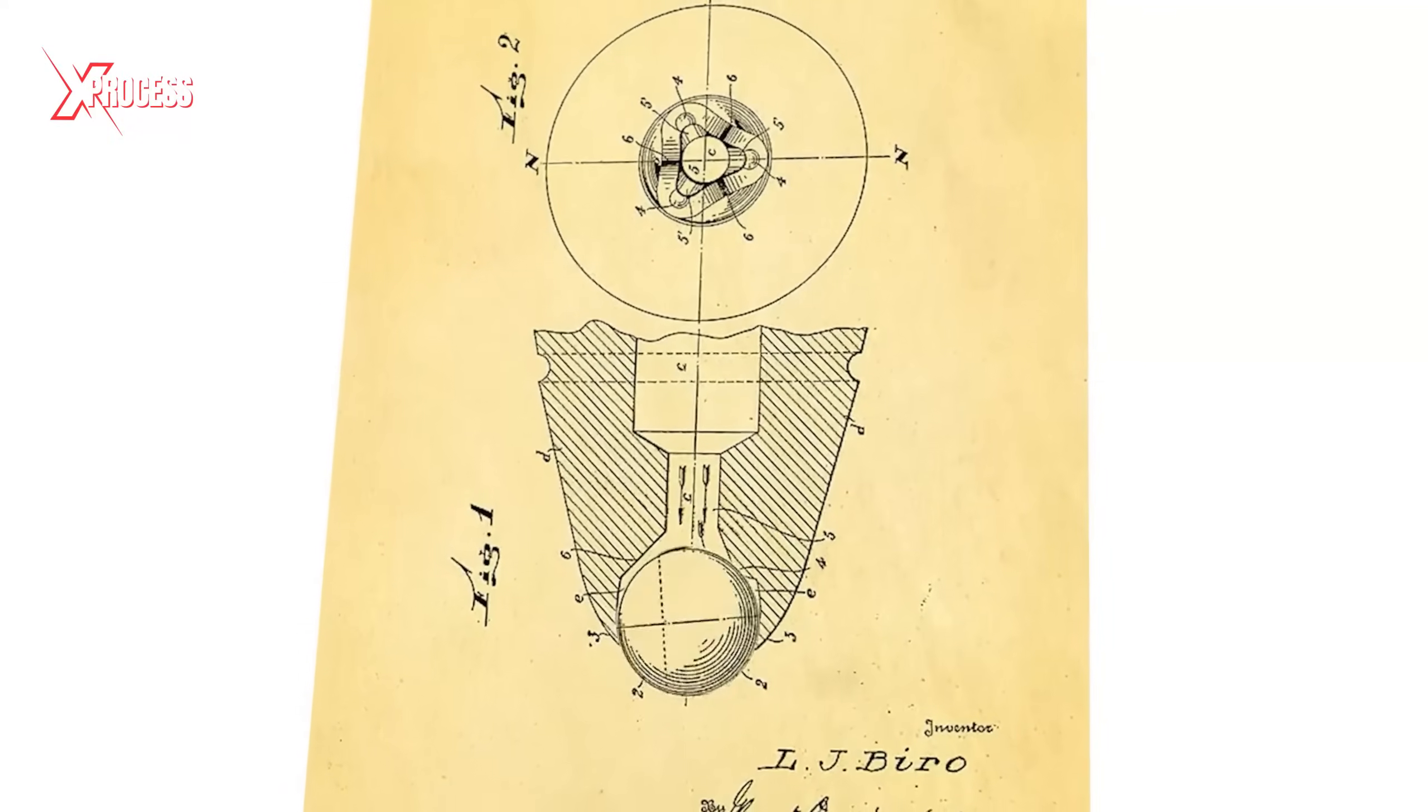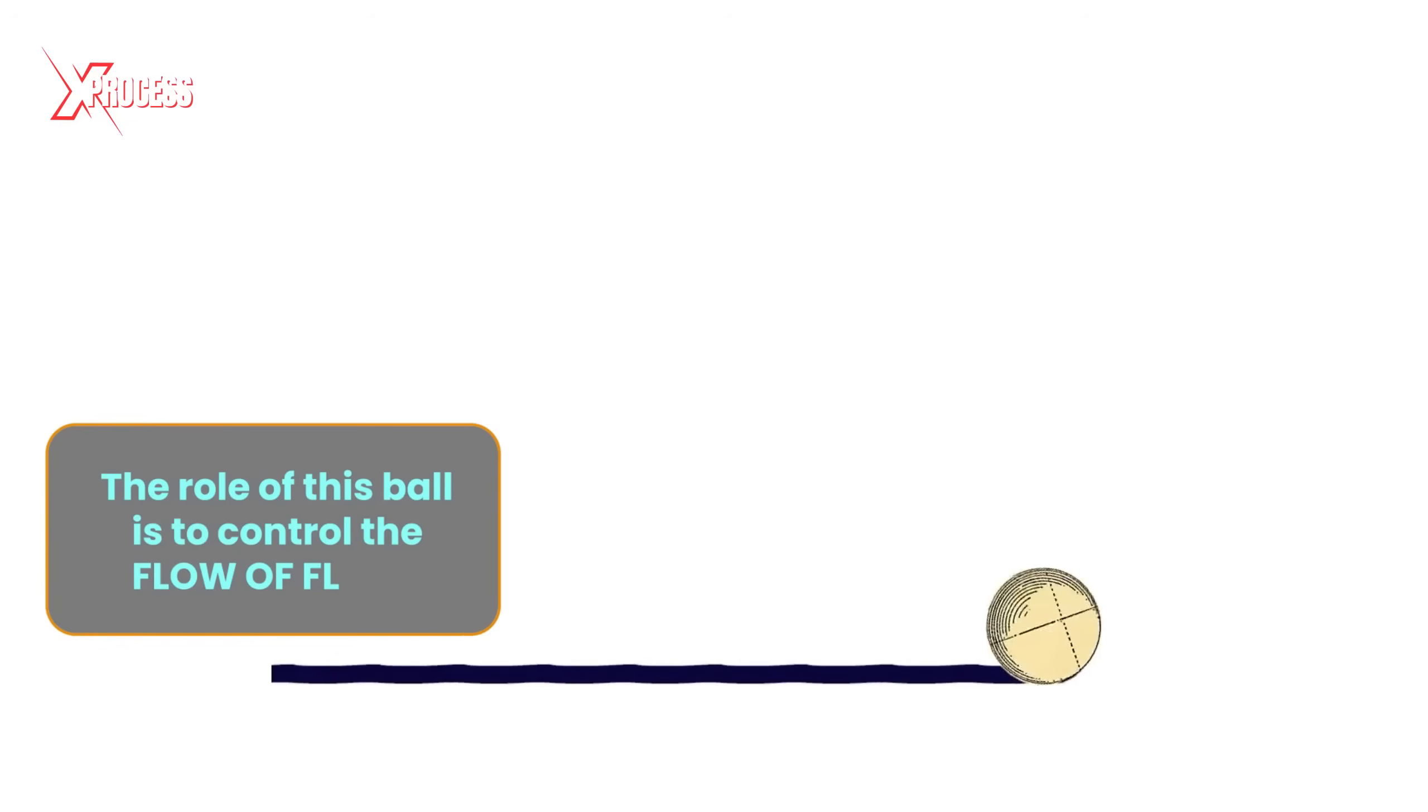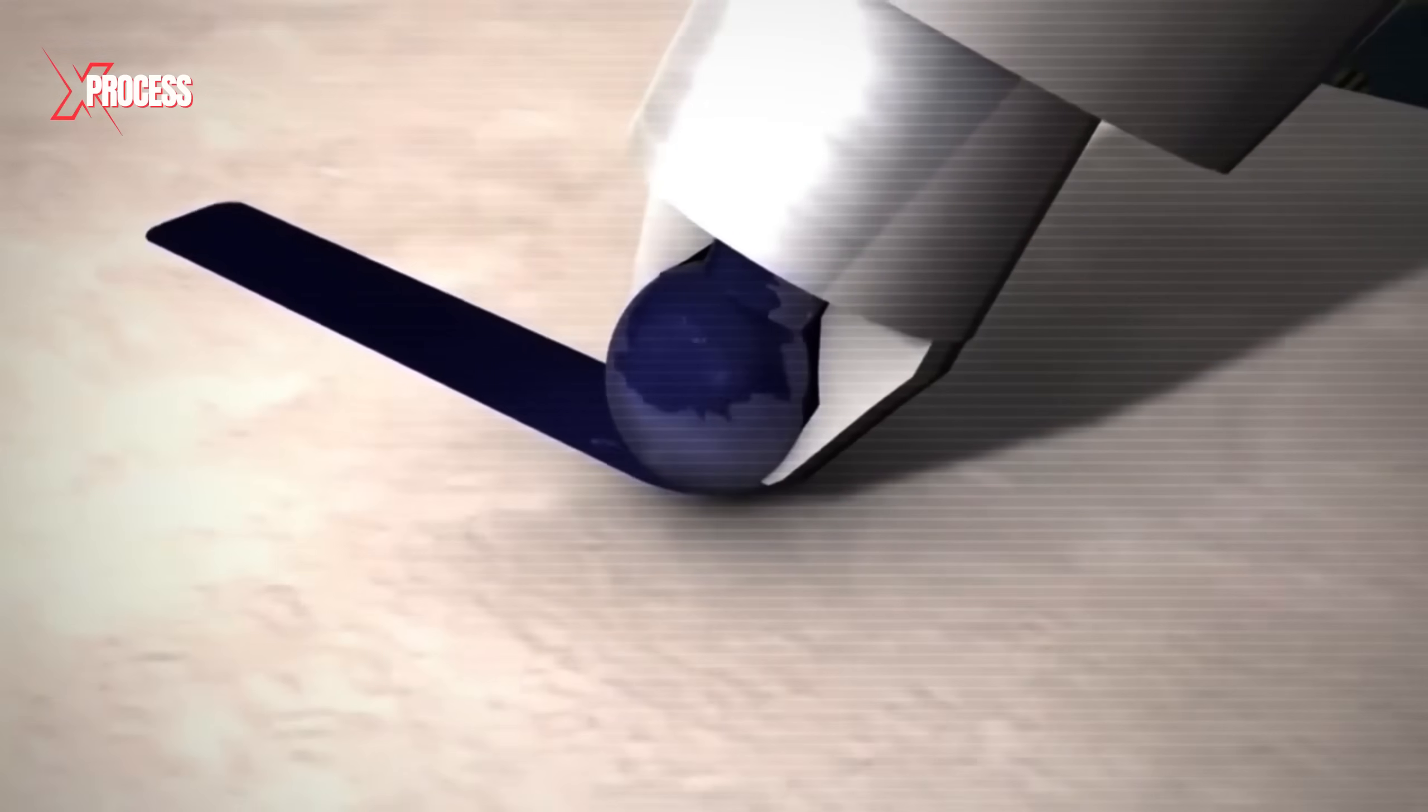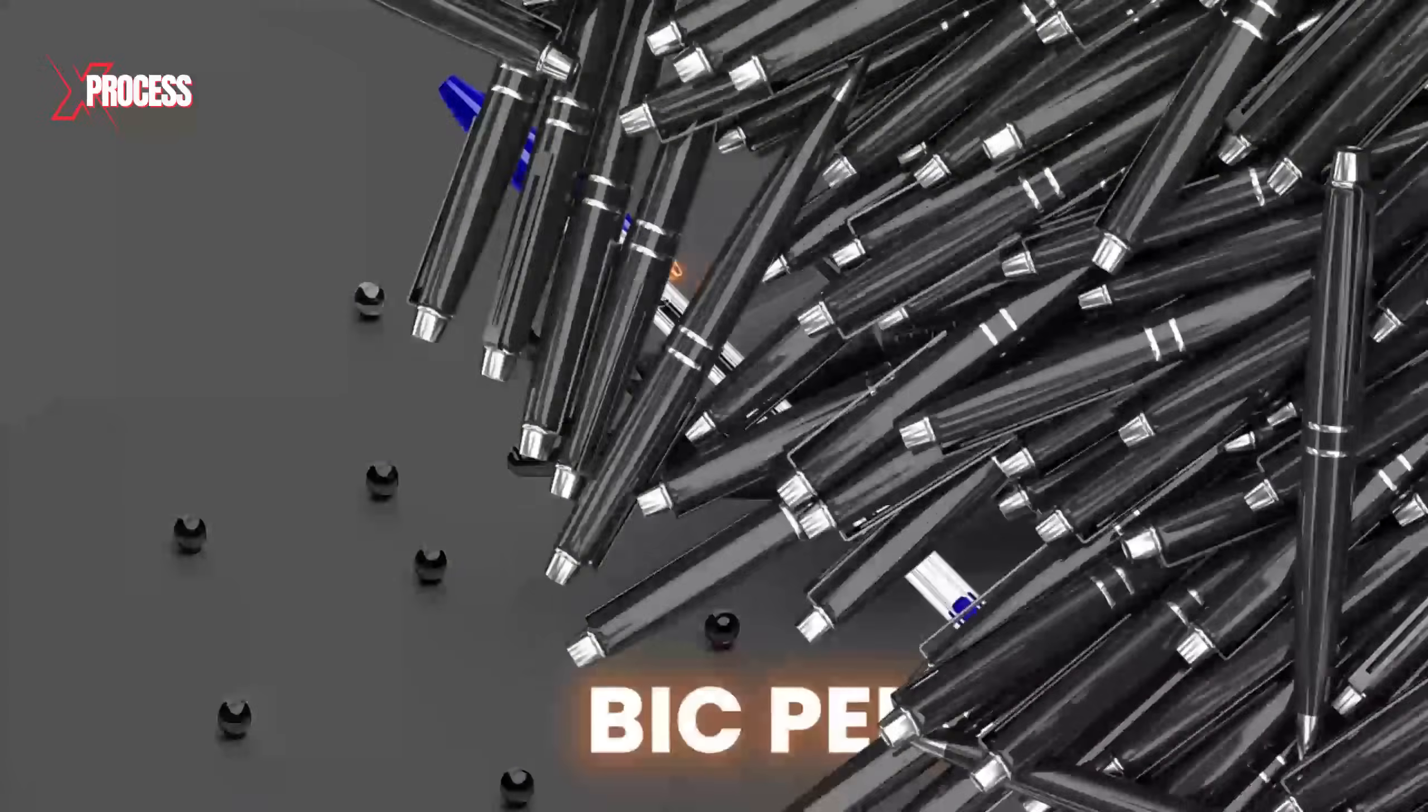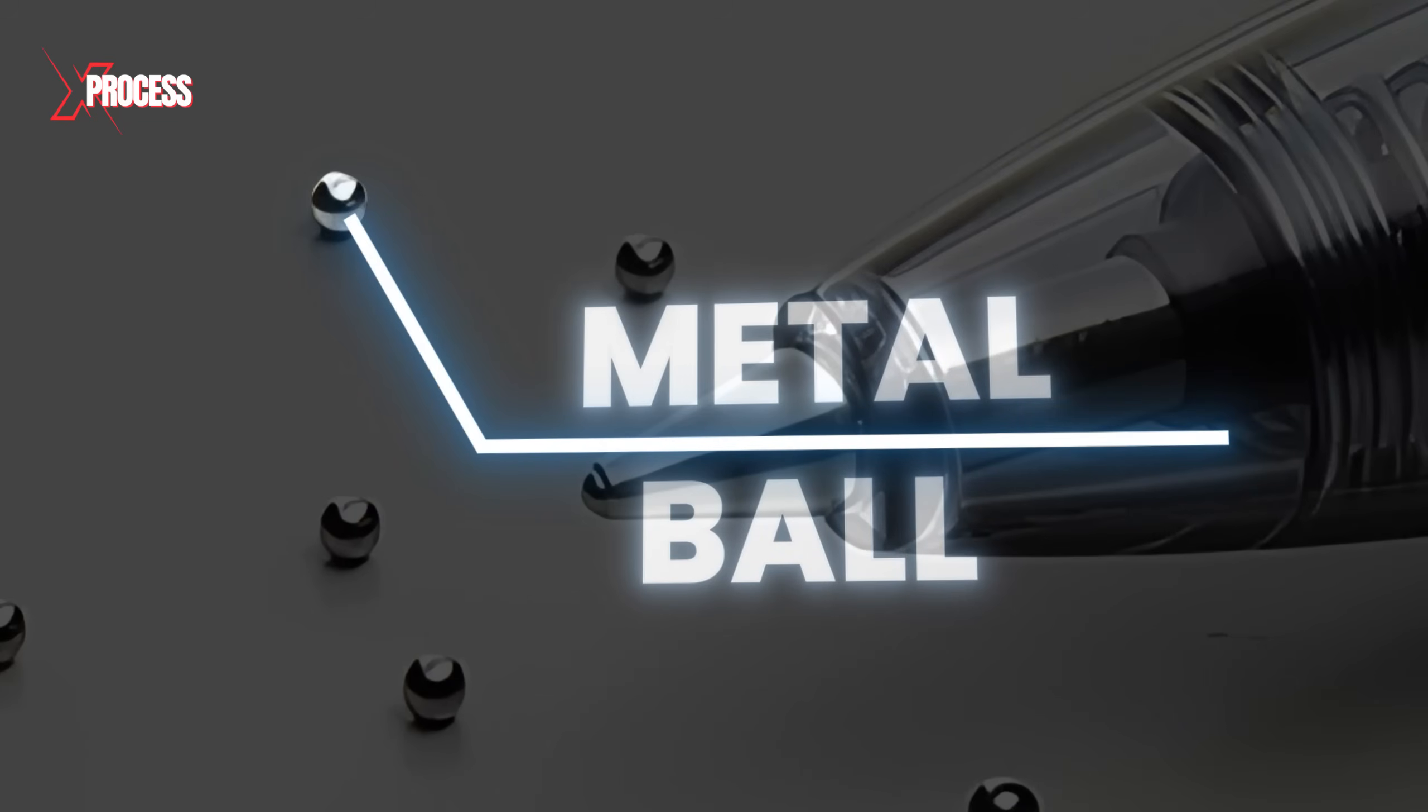The key to producing the perfect pen lies in the small metal ball at the tip. The role of this ball is to control the flow of fluid when the pen is not in use. It seals the liquid ink inside. When in use, the ball rotates smoothly, transferring just the right amount of ink to the paper, ensuring precise and consistent writing. The production of BIC pens starts with the creation of the metal ball, resembling a tiny sphere.